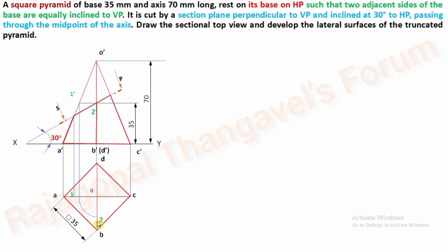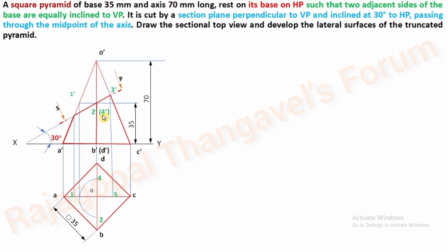Take O as center and this point as radius; draw an arc to cut slant edge OB — this is point number 2. The third cutting point of the section plane, marked 3', gives a vertical projector to cut corresponding slant edge OC — mark it as 3. For the last slant edge OD, take O as center and the vertical projector meeting point as radius to draw an arc and fix point 4.